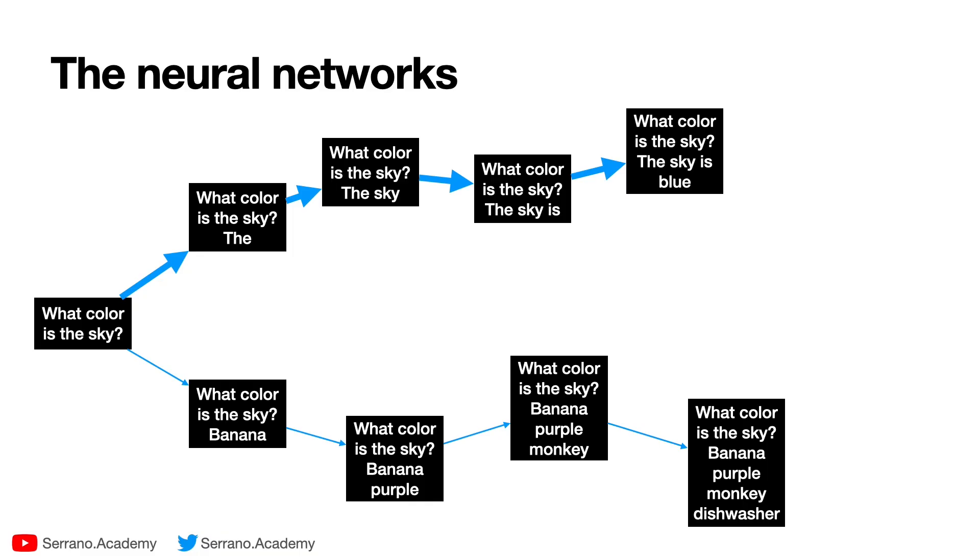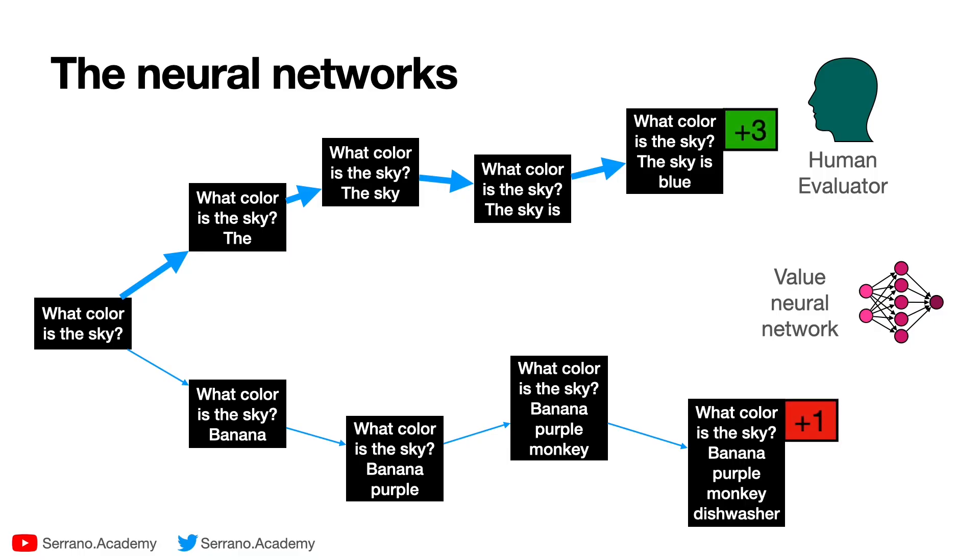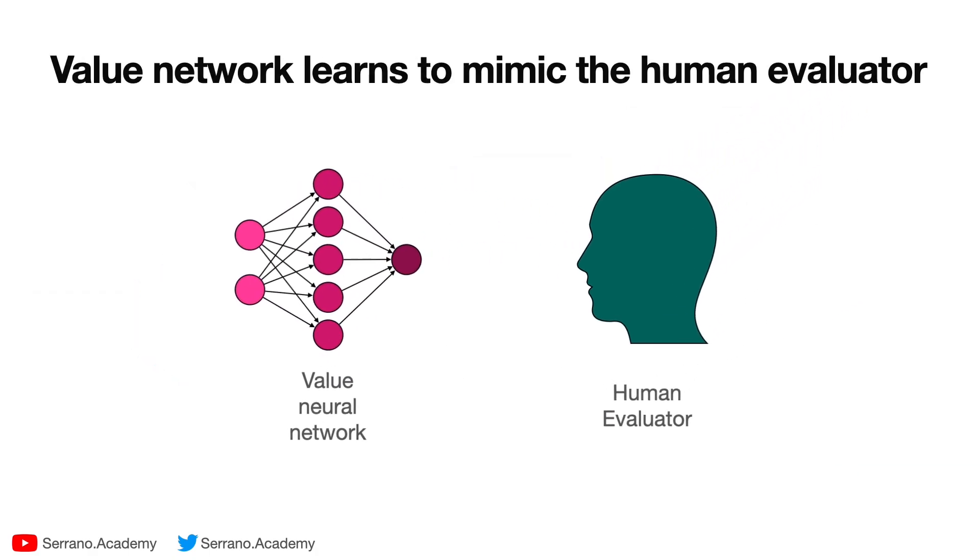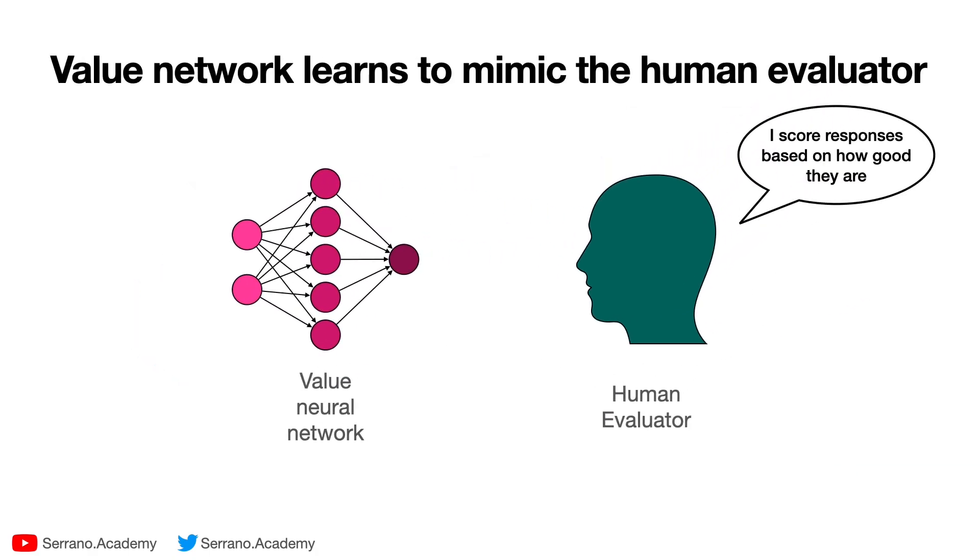Let's analyze these neural networks just a little more to see what they actually do. So what does the value neural network do? Well, remember that you have a human evaluator that gives ratings that turn into scores. Well, the value neural network simply learns to mimic this human evaluator because the human evaluator basically scores responses based on how good they are, and the value neural network assigns values to states based on how good they are. These two are the exact same thing. Therefore, the value neural network is trying to learn and to mimic the work of the human evaluator. Basically, it's trying to predict what score is a human evaluator going to give a particular response.